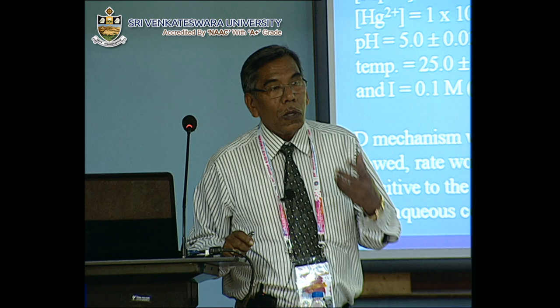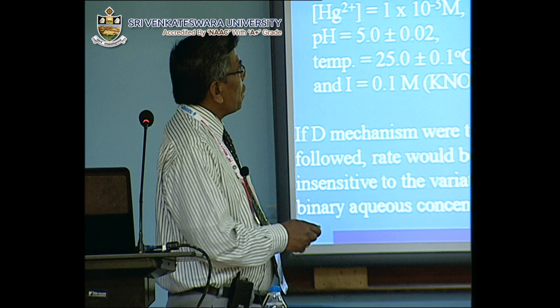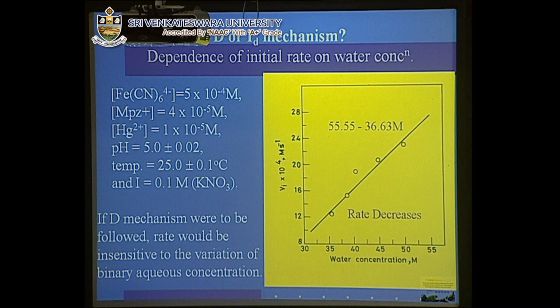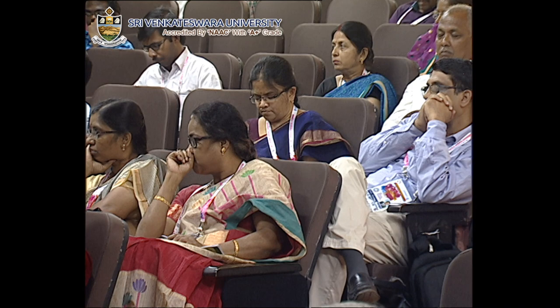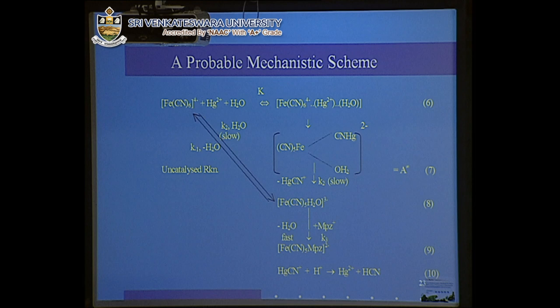For those who may not know — water also has a concentration and it is 55.5 molar. So water concentration was decreased by making a binary solvent system through addition of alcohol. The rate of the reaction decreased as the concentration of water decreased, from 55 molar to 35 molar. Had a D mechanism been followed, the rate would have been insensitive to variation in solvent concentration. But in this case it was quite sensitive, proving it is an Id mechanism.